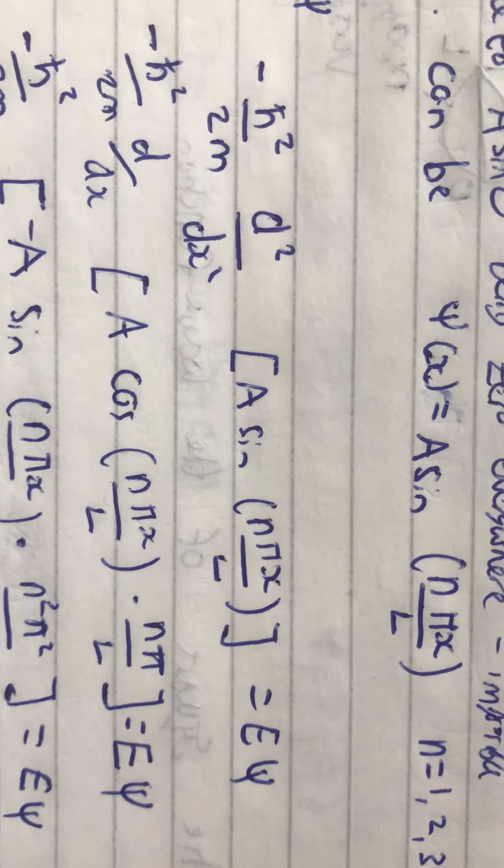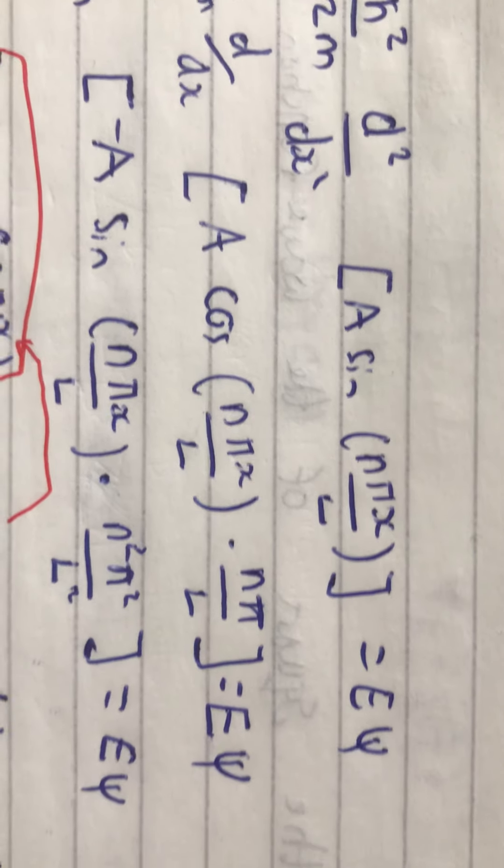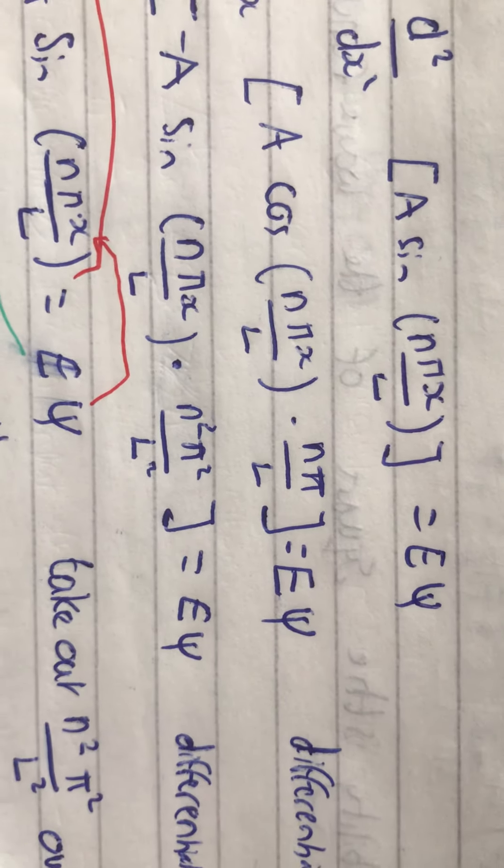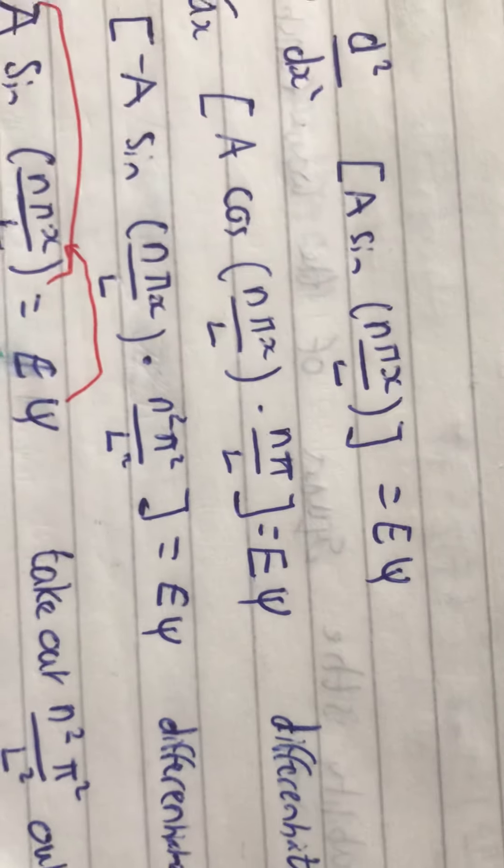Because, if you differentiate cos, you get minus sine. And, we've got another factor of nπ over L out. And, that's equal to E times the wave function.